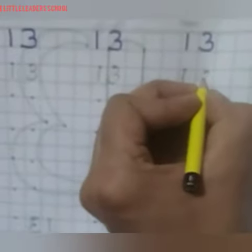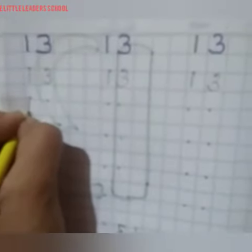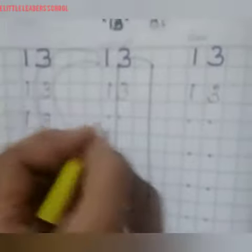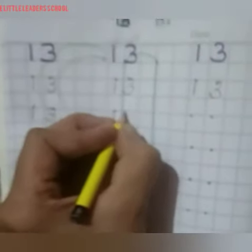Standing line, half circle, again half circle. 1, 3, 13. Again, standing line, half circle, again half circle. Standing line, half circle, again half circle.